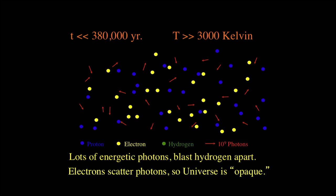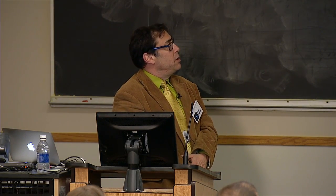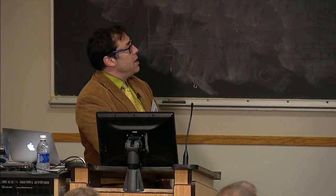Back then there were lots of energetic particles of light called photons — a billion for every proton or electron. Every time a proton and electron would get together to form a hydrogen atom, a photon would come along and blast it apart. Because those electrons, hydrogen atoms, and protons scattered the photons, the photons couldn't travel very far, and for that reason the universe was opaque — you couldn't see through it.